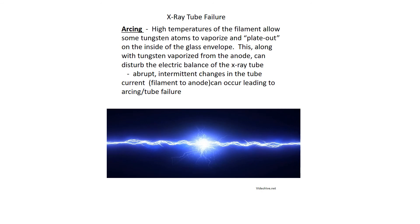X-ray tubes also fail due to arcing. High temperatures of the filament allow some tungsten atoms to vaporize and plate out on the inside of the glass envelope. This, along with tungsten vaporized from the anode, can disturb the electric balance of the x-ray tube. Abrupt intermittent changes in tube current can lead to arcing or tube failure. Arcing is caused by the deposition of tungsten on the inside of the glass — the deposited metal can attract electrons. Also remember that extra tungsten increases the inherent filtration in your x-ray tube.